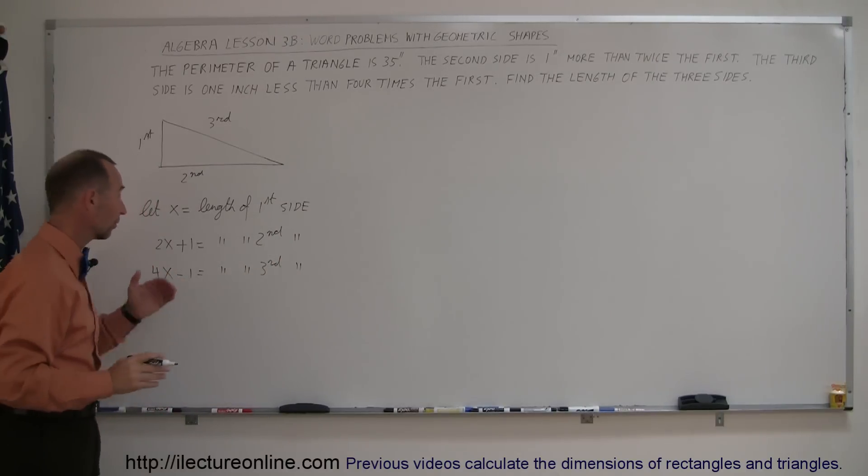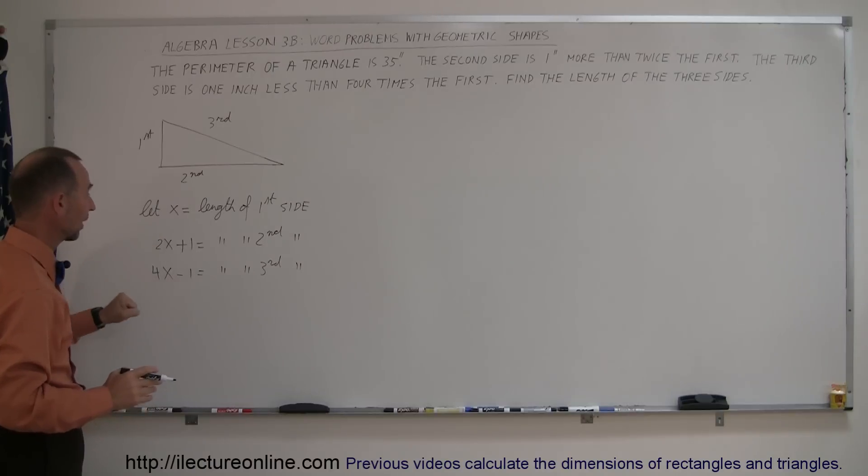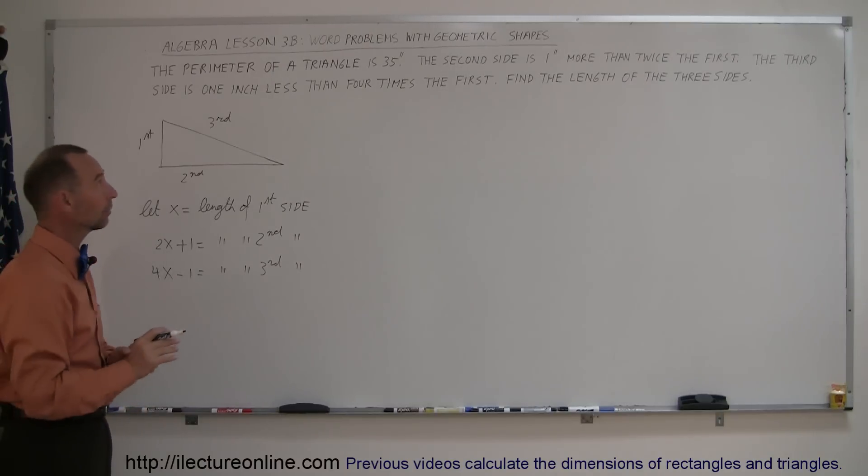So now we have the length of the first side, the second side, and then the third side expressed in terms of x. Now we can go ahead and solve the problem. It says here that the triangle is 35 inches.